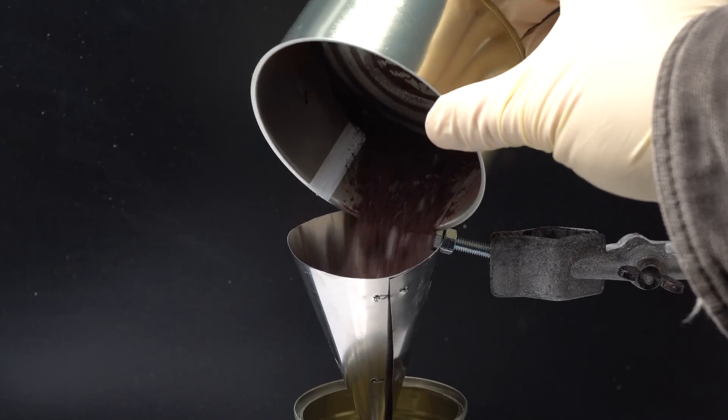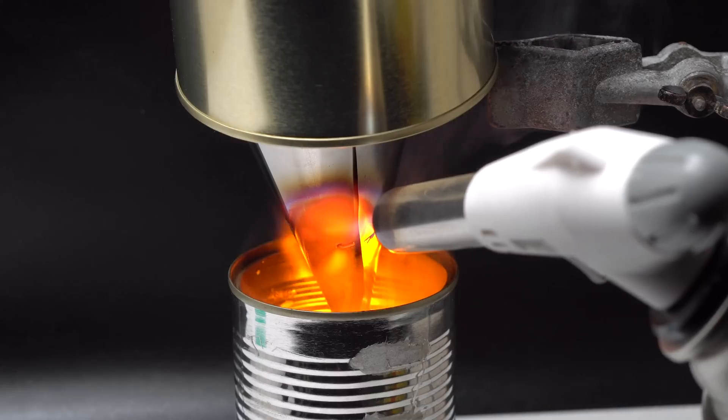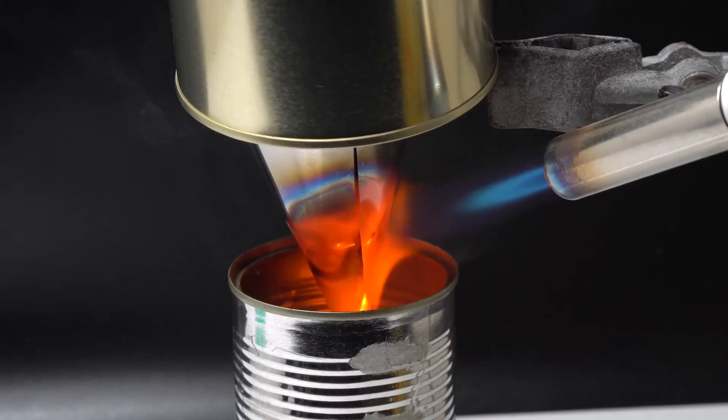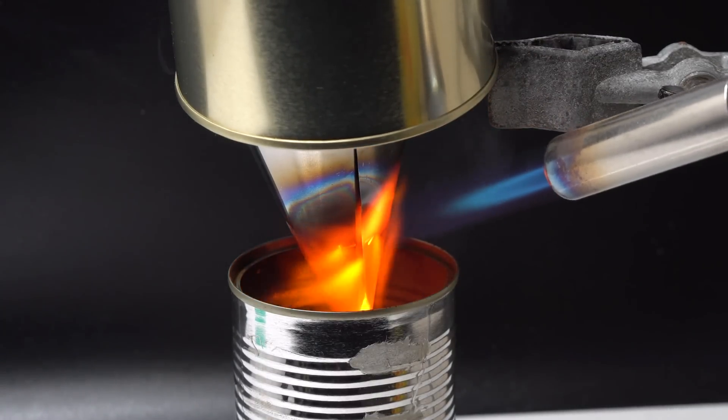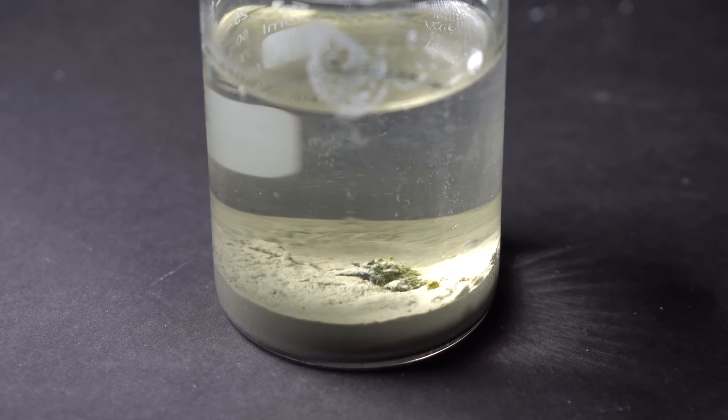After that, I mixed the obtained oxide with pieces of lithium and added 40% table salt in order to boost separation of metal from the lithium oxide. When the reaction ended, I dissolved the obtained lump in water in order for the remaining lithium to react with water.